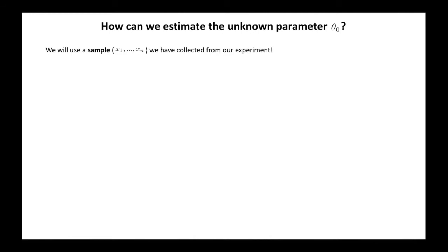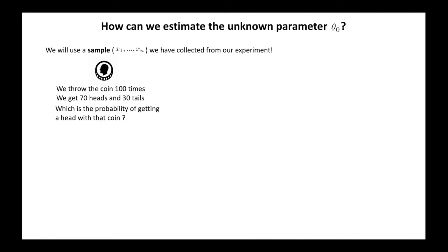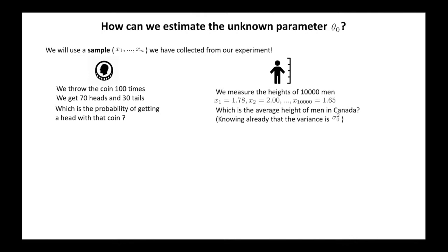For example, we can throw a coin 100 times and write down how many heads and tails we get, then make our guess about the probability of getting a head with this particular coin. Similarly, in the example of the height, we can consider the heights of 10,000 men and give an estimation for the average height of men in Canada. Now we are going to see the theory that allows us to answer this question and, in general, to find an estimation for all parametric models.